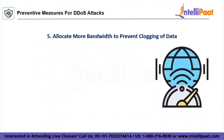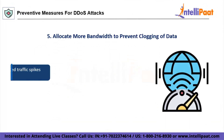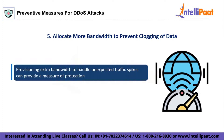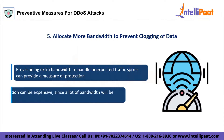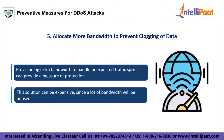The final tip on our list is to allocate more bandwidth to prevent clogging of data. Since DDoS attacks fundamentally operate on the principle of overwhelming systems with heavy traffic, simply provisioning extra bandwidth to handle unexpected traffic spikes can provide a measure of protection. However, this solution can be expensive since a lot of that bandwidth will go unused most of the time.